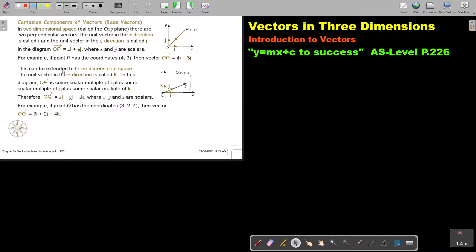This can be extended to three-dimensional space. The unit vector in the Z direction is called K. In this diagram, OP is some scalar multiple of I plus some scalar multiple of J plus some scalar multiple of K.